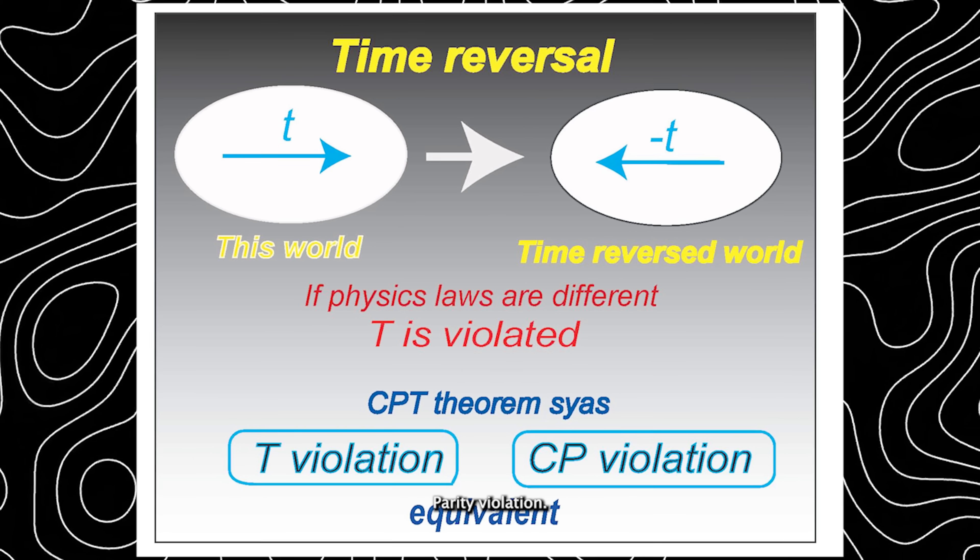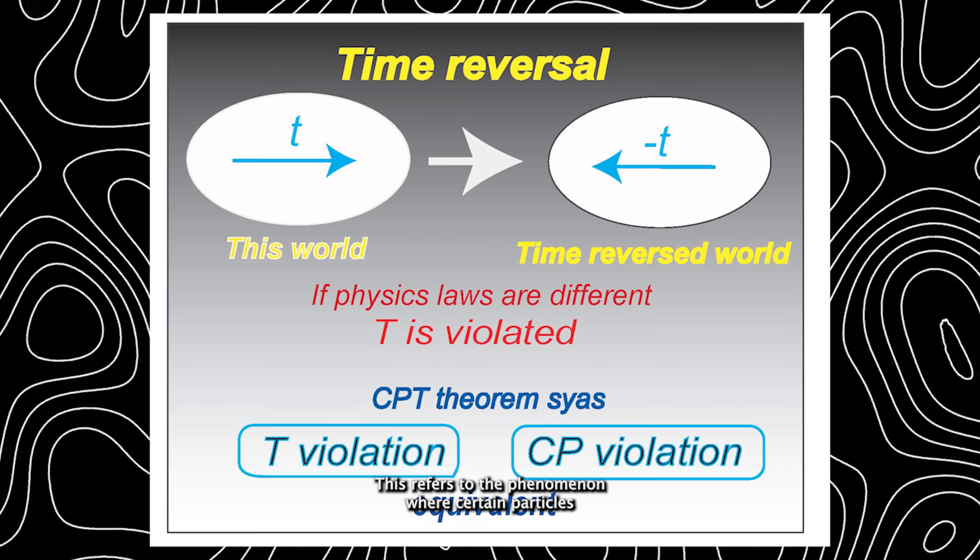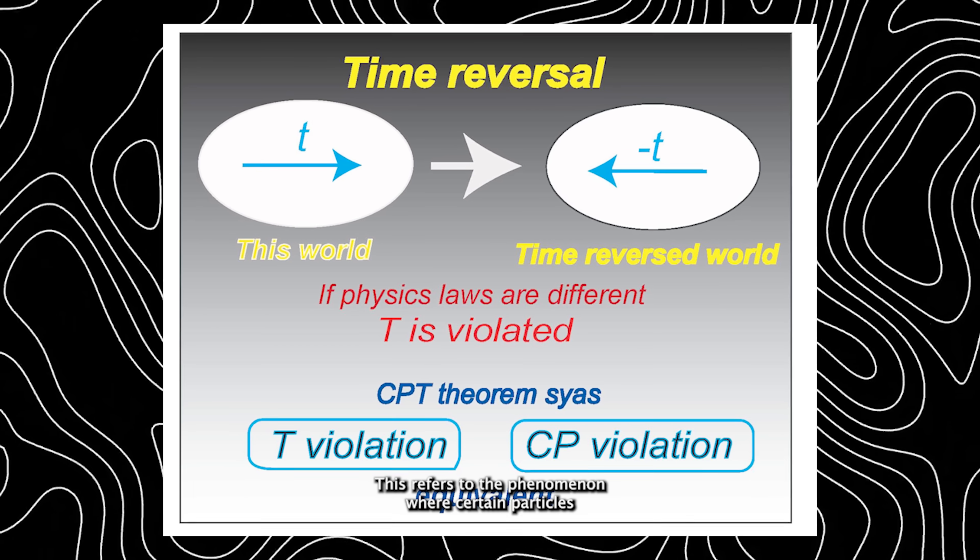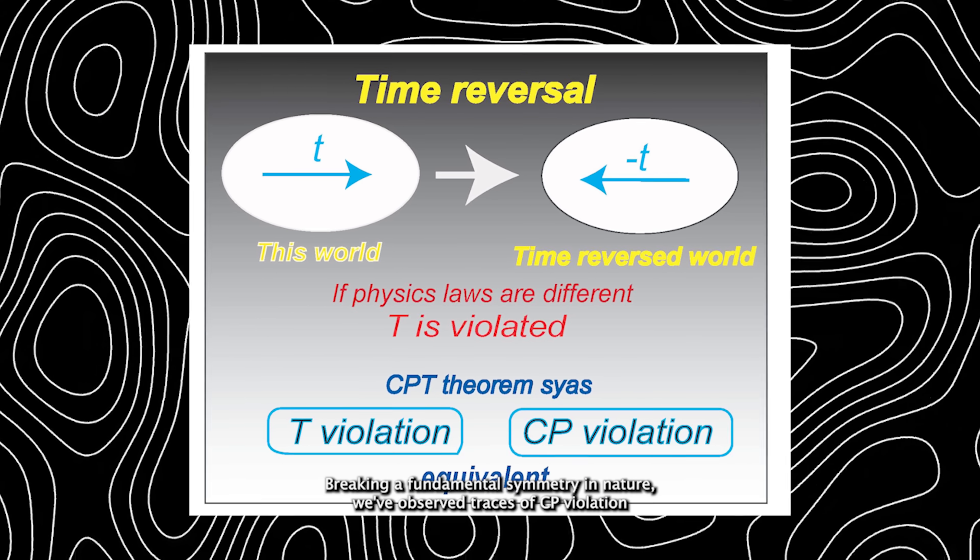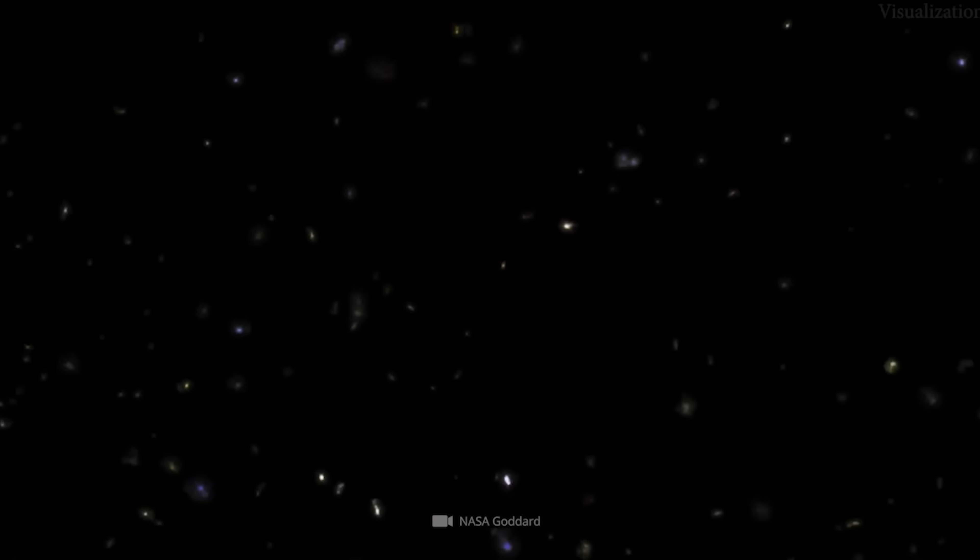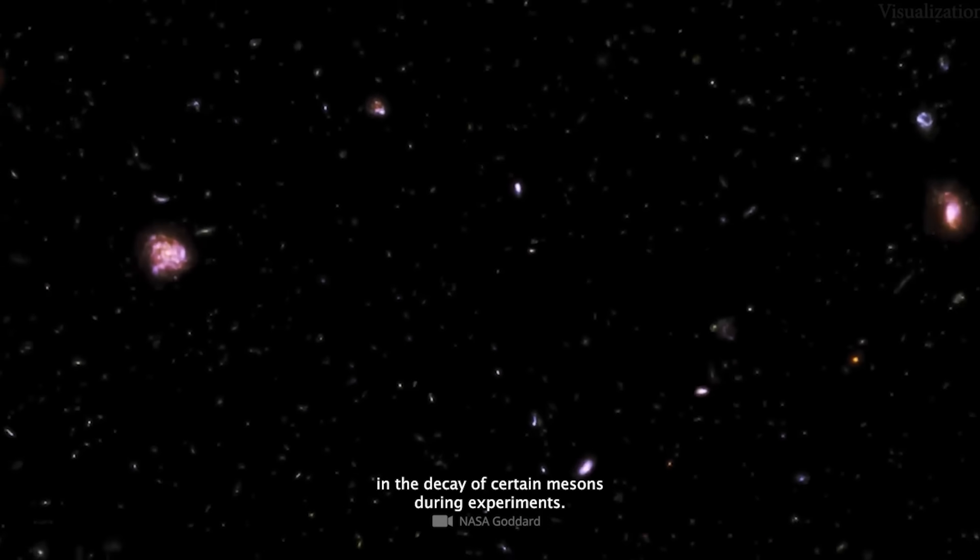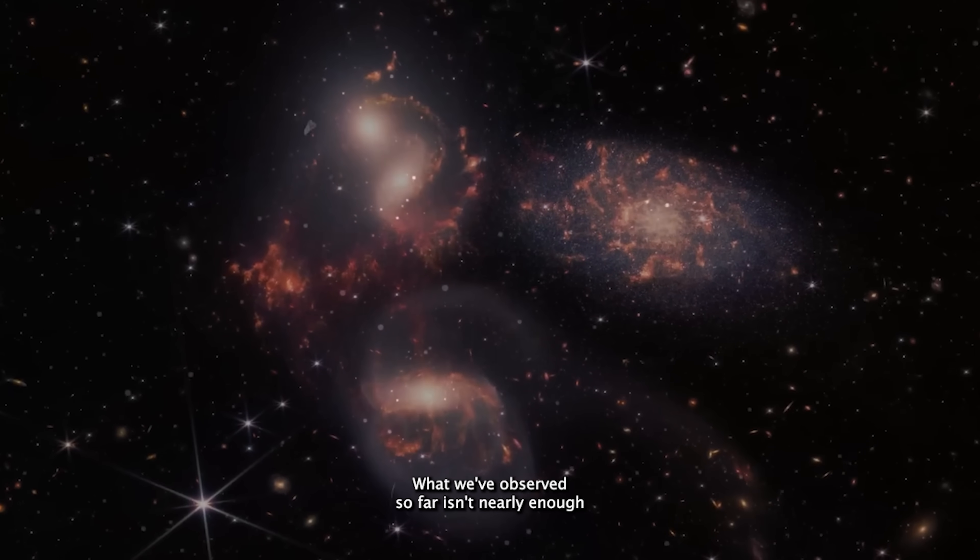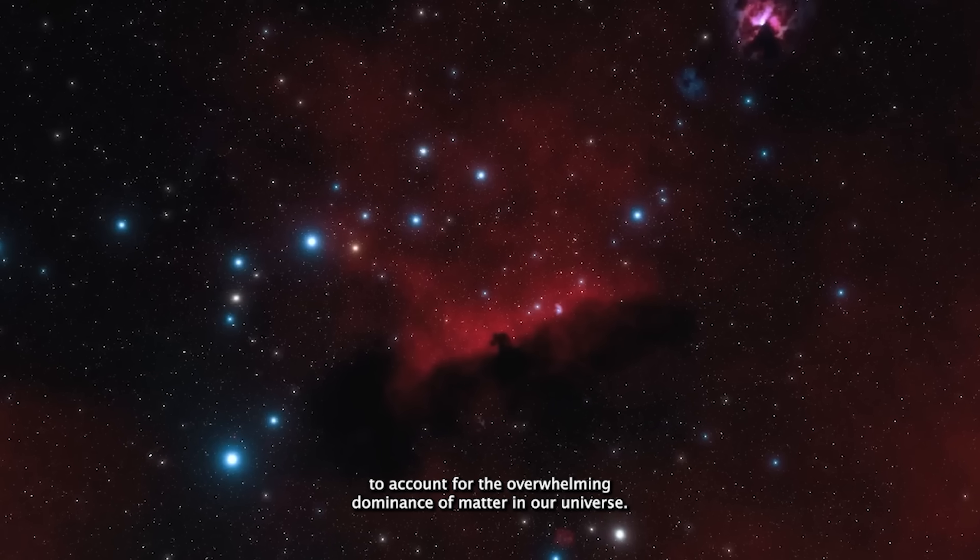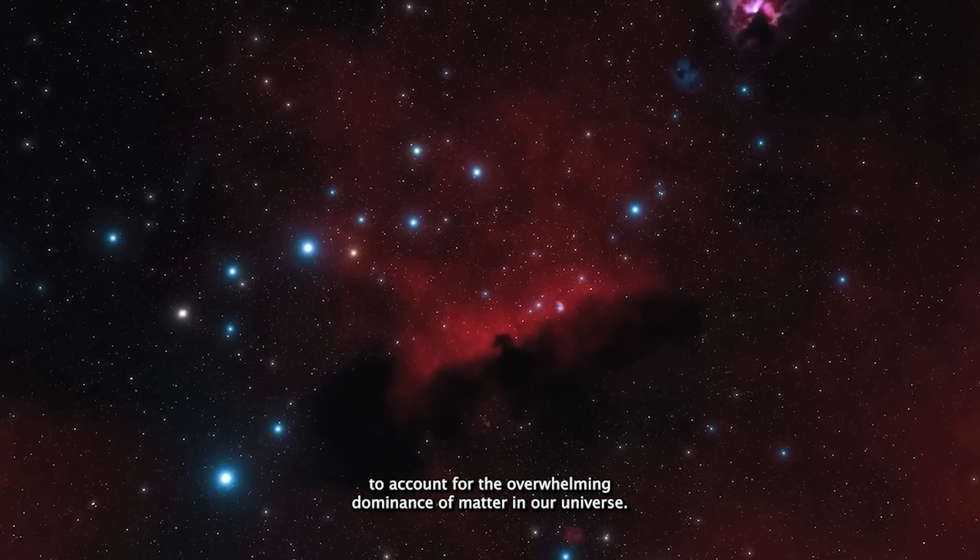Short for charge parity violation, this refers to the phenomenon where certain particles and their antiparticles don't behave exactly the same, breaking a fundamental symmetry in nature. We've observed traces of CP violation in the decay of certain mesons during experiments. But here's the problem: what we've observed so far isn't nearly enough to account for the overwhelming dominance of matter in our universe.